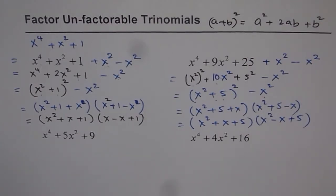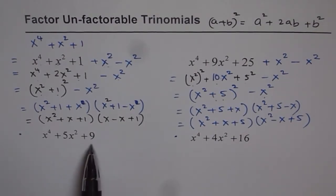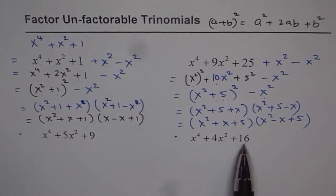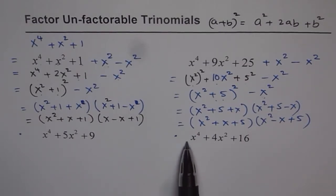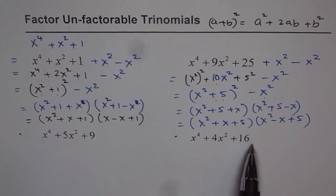Now these are 2 practice problems for you. So I would like you to adopt this method and practice. Now here you know it is (x²)², 3². So the number here should be 6, which is 2 times 3. To make it 6 you have to add and subtract x². How about this one? This is kind of typical. You want 2 times 4, that is 8 in the center, because 16 is 4². To get 8 what will you add and subtract? 4x². Do the needful factor in practice.